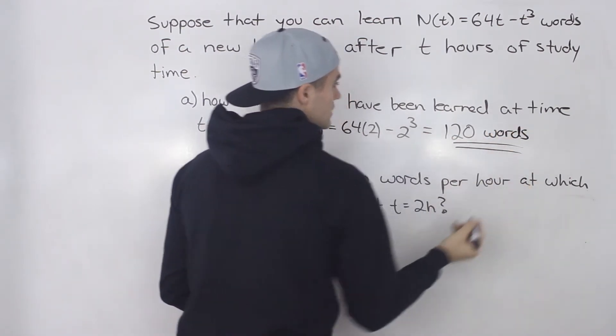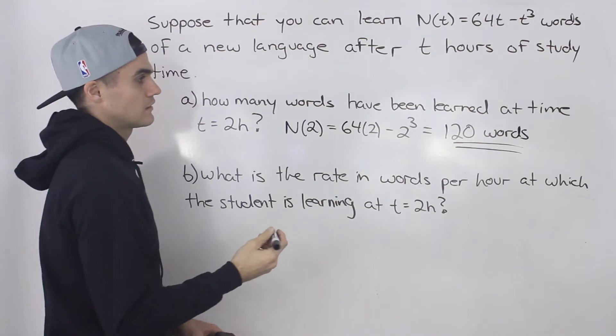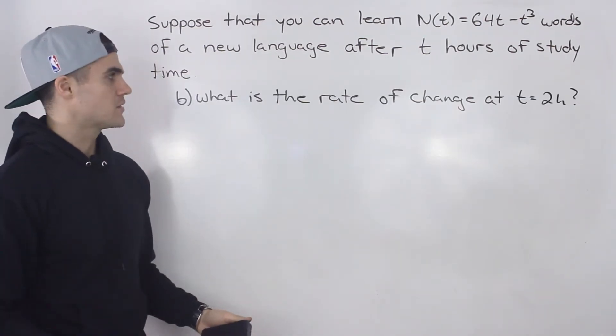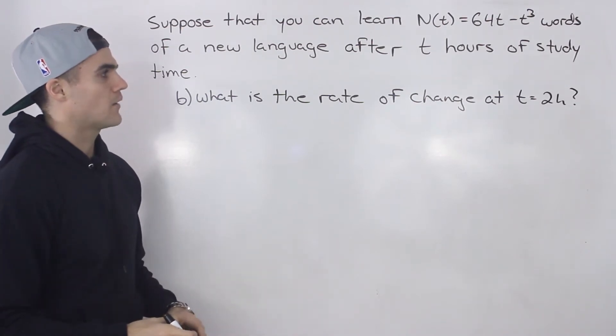So after two hours of study time, you can learn 120 words. And then moving on to part B, what is the rate of change at a t value of two hours?